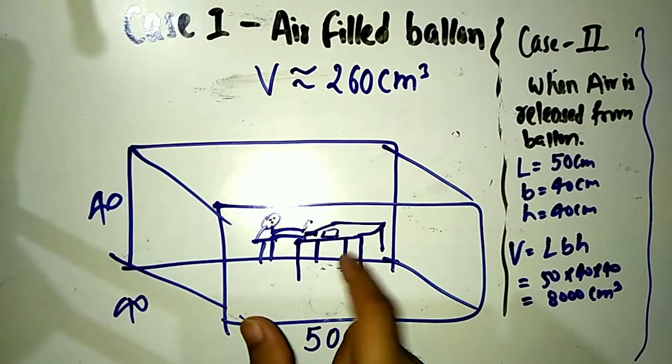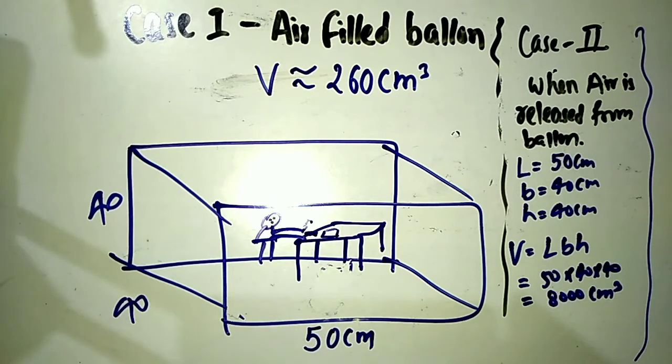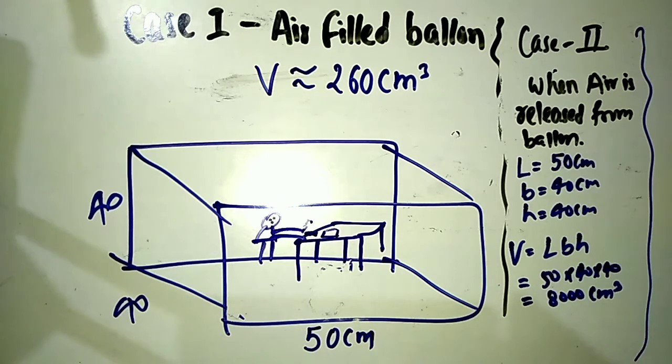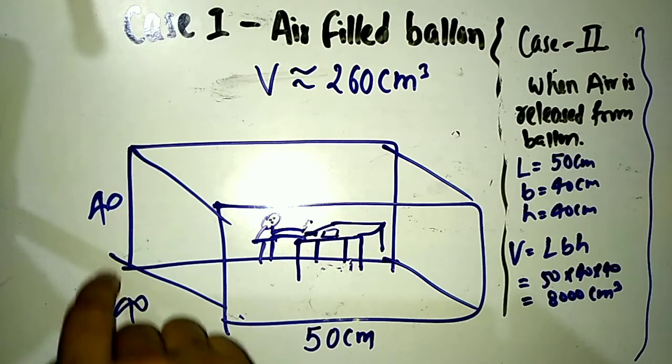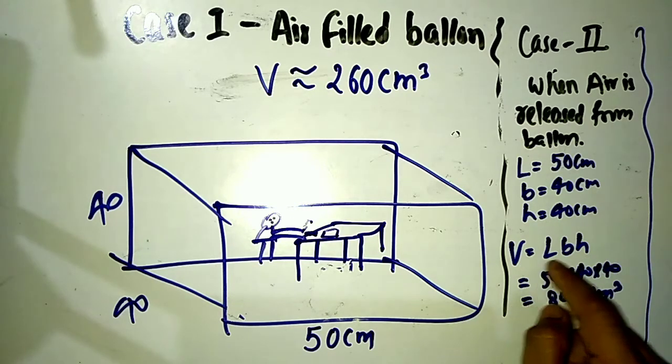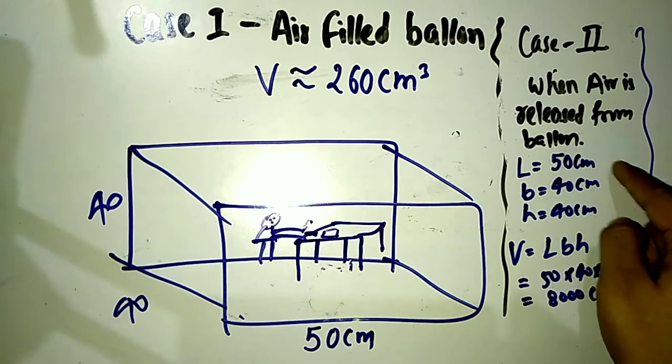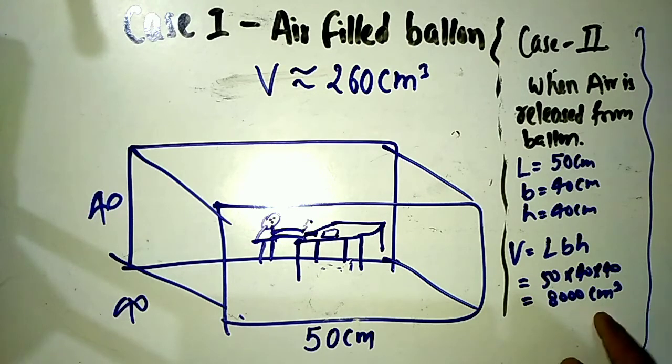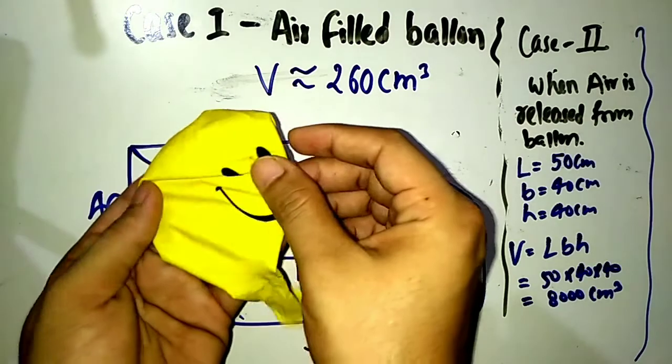The length of my room is around 50 centimeters, breadth is 40 centimeters, and height is also 40 centimeters. Using the formula for volume of a cuboid, V = L × B × H: 50 cm × 40 cm × 40 cm. The volume I get is 8000 cm³.